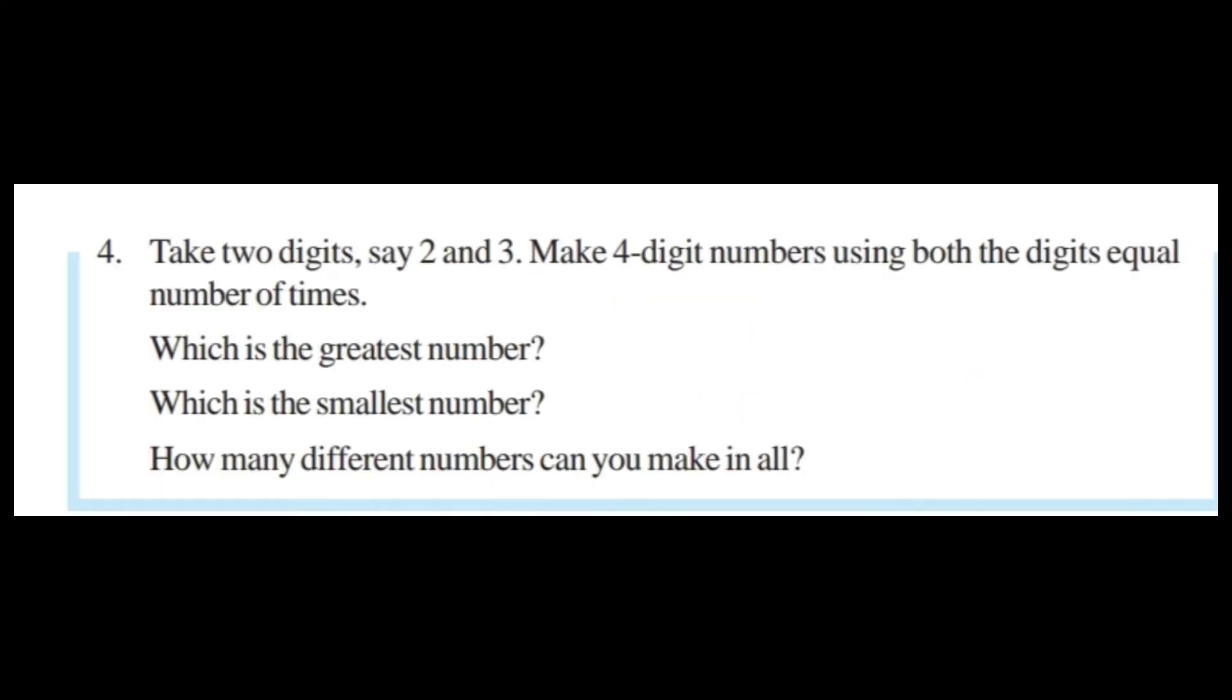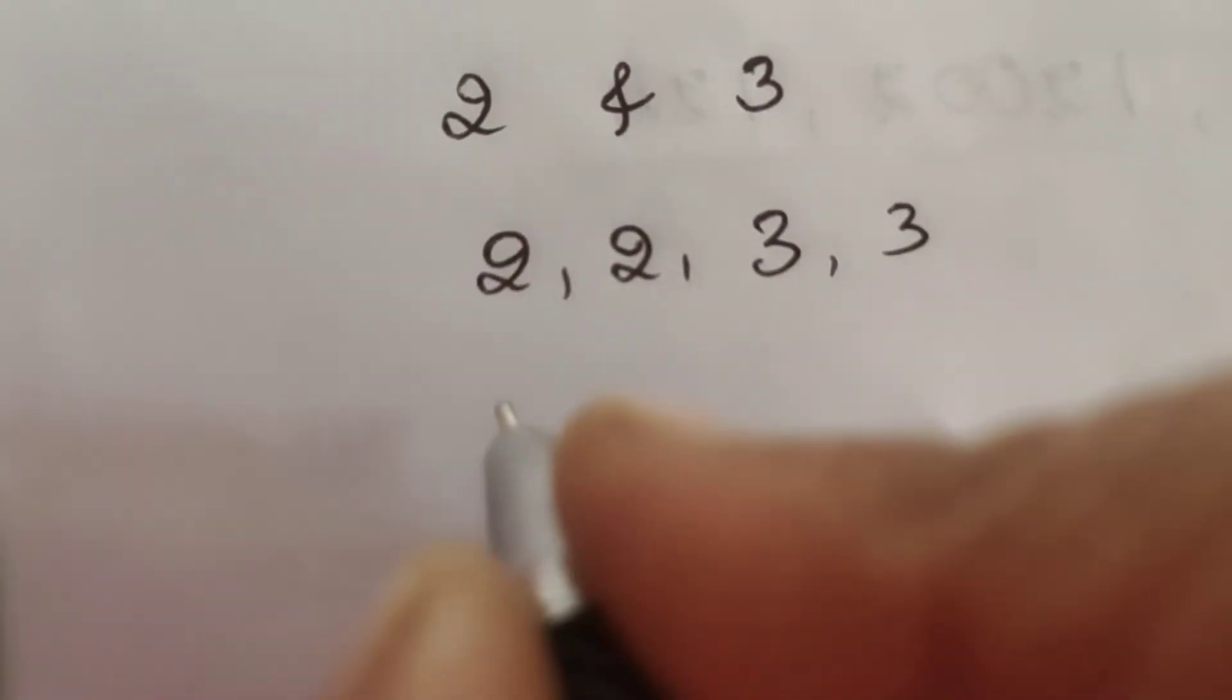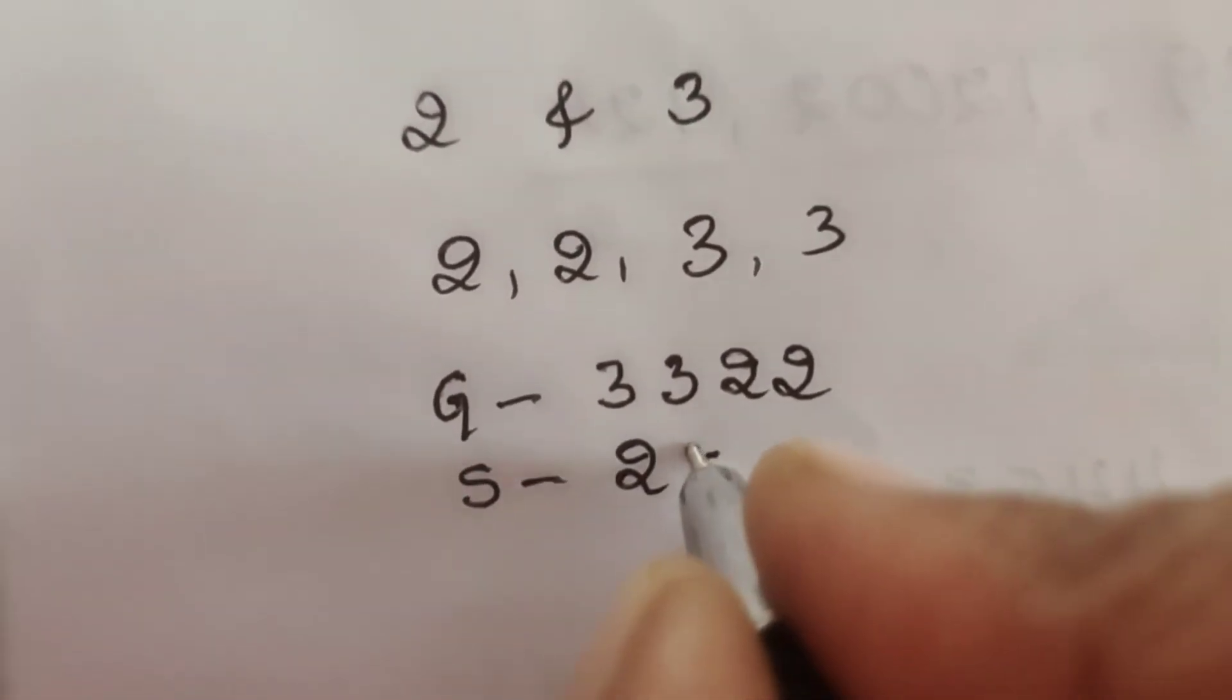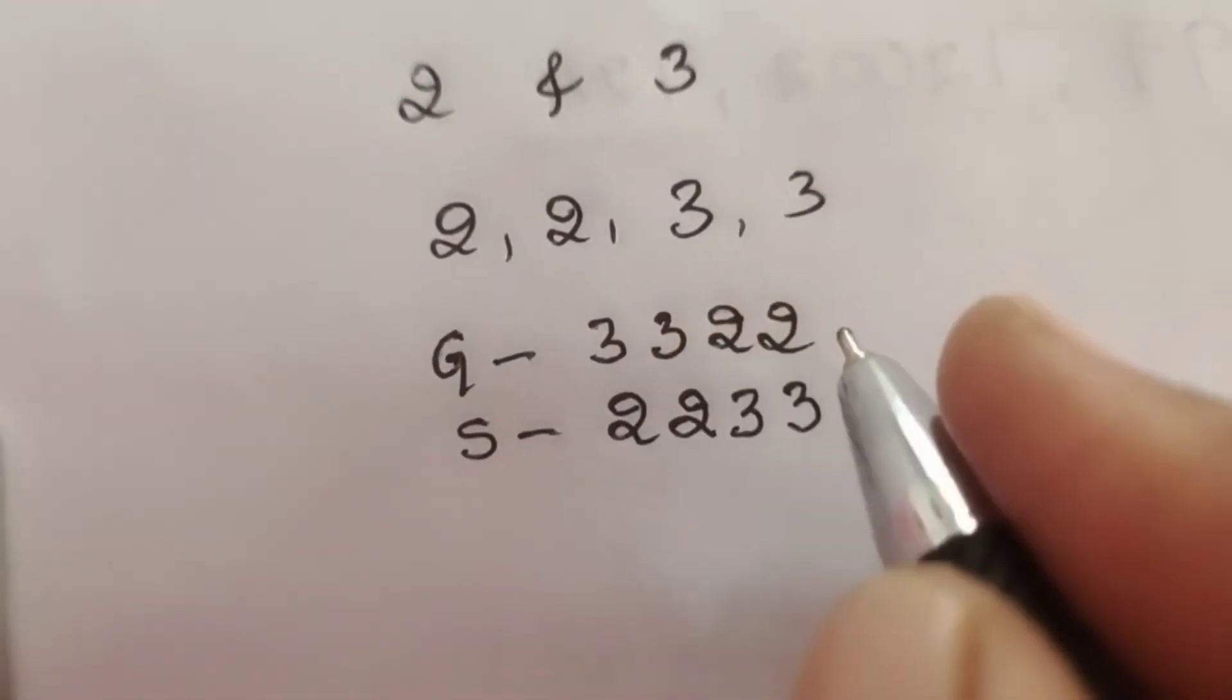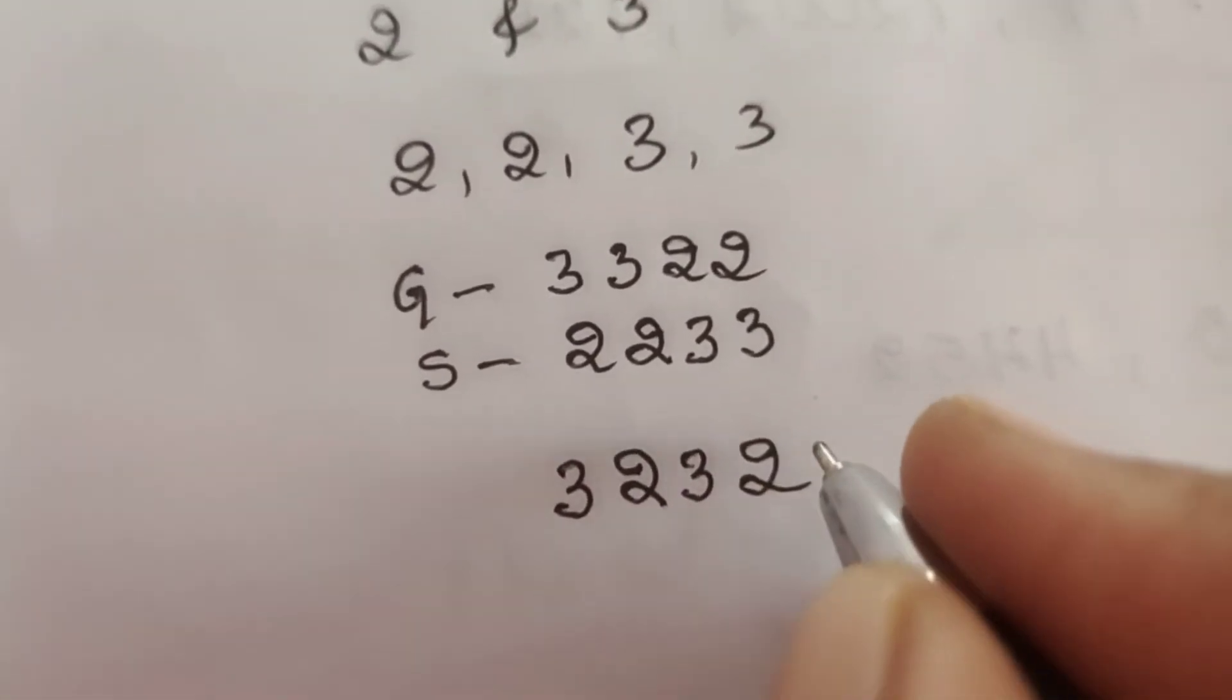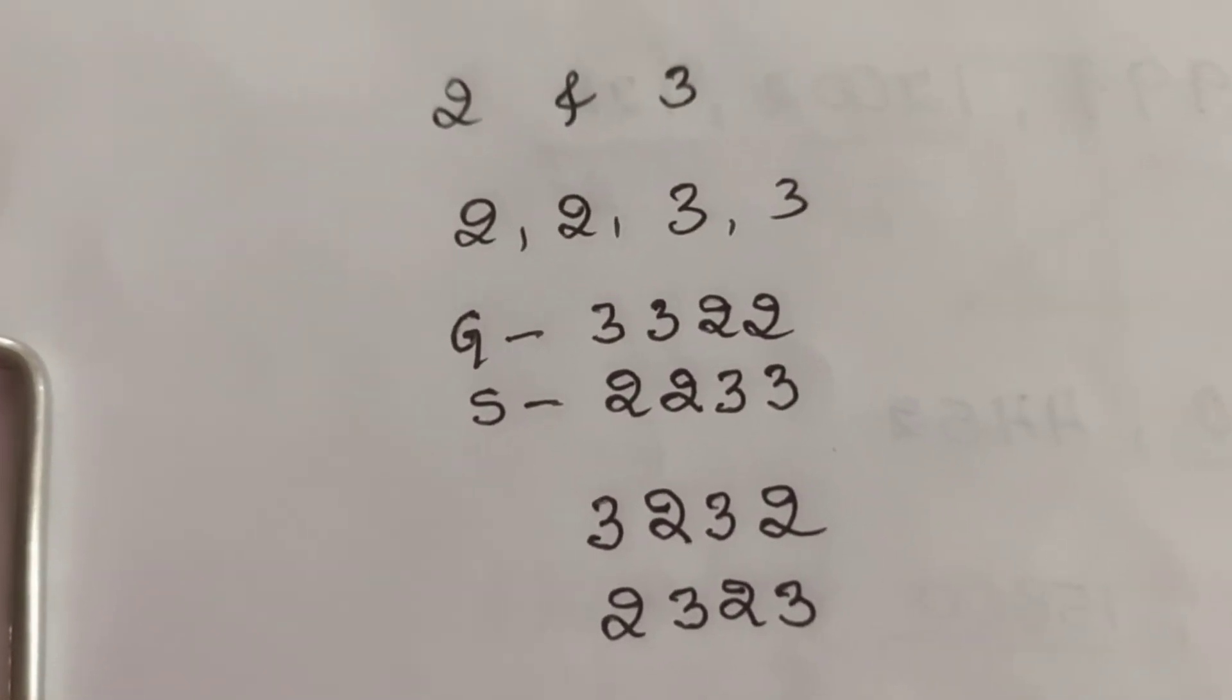Fourth question: Take two digits, say 2 and 3. Make four-digit numbers using both the digits equal number of times. Which is the greatest and which is the smallest? How many different numbers can you make in all? You can form the greatest number 3322 and the smallest number 2233. See, this is one number, this is one number, next 3232 is one number, you can make 2323. Four numbers you can make in all.